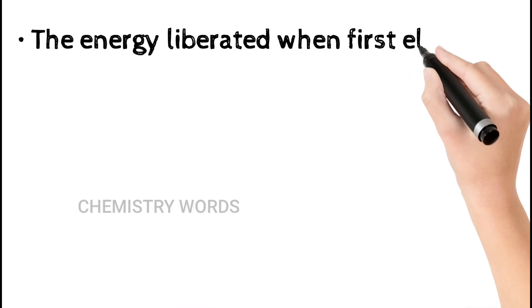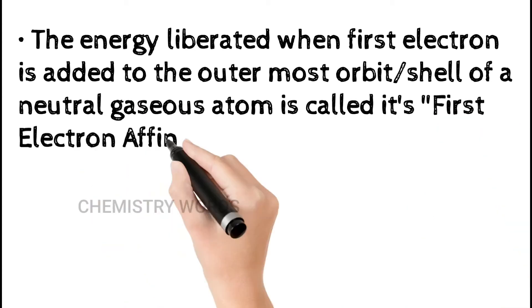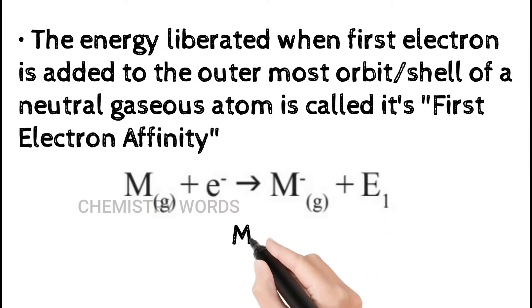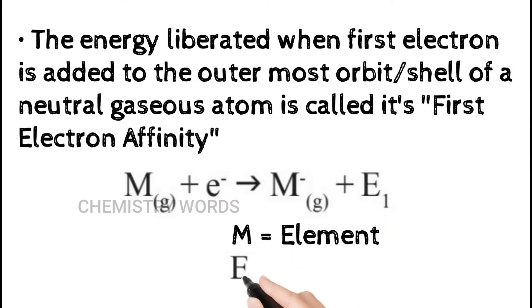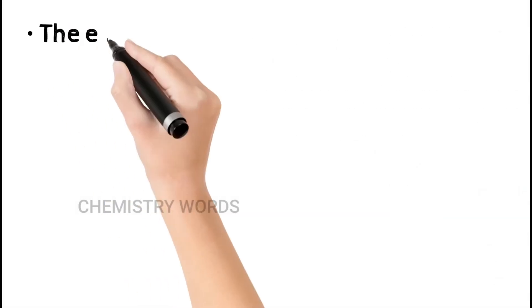The energy liberated when the first electron is added to the outermost orbit or shell of a neutral gaseous atom is called its first electron affinity. If we add the first electron to an atom, it releases energy — that energy is specifically known as first electron affinity. In this example, M is an atom in gas state; adding one electron gives M⁻ (an anion) and releases energy E1, where E1 is the first electron affinity.